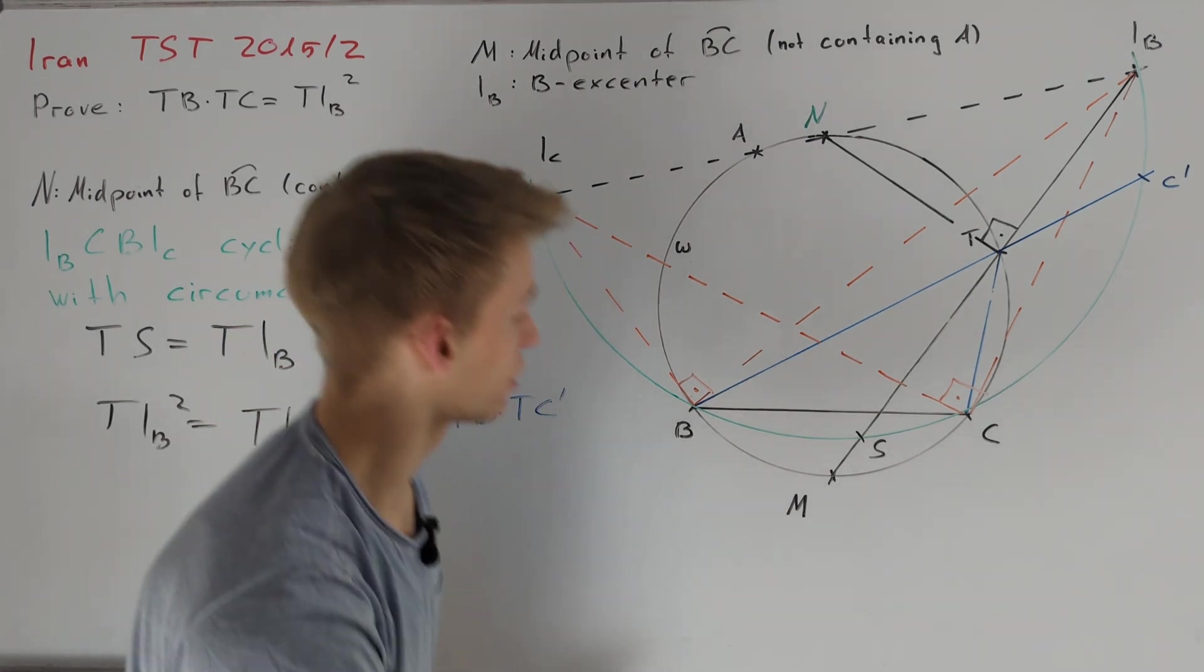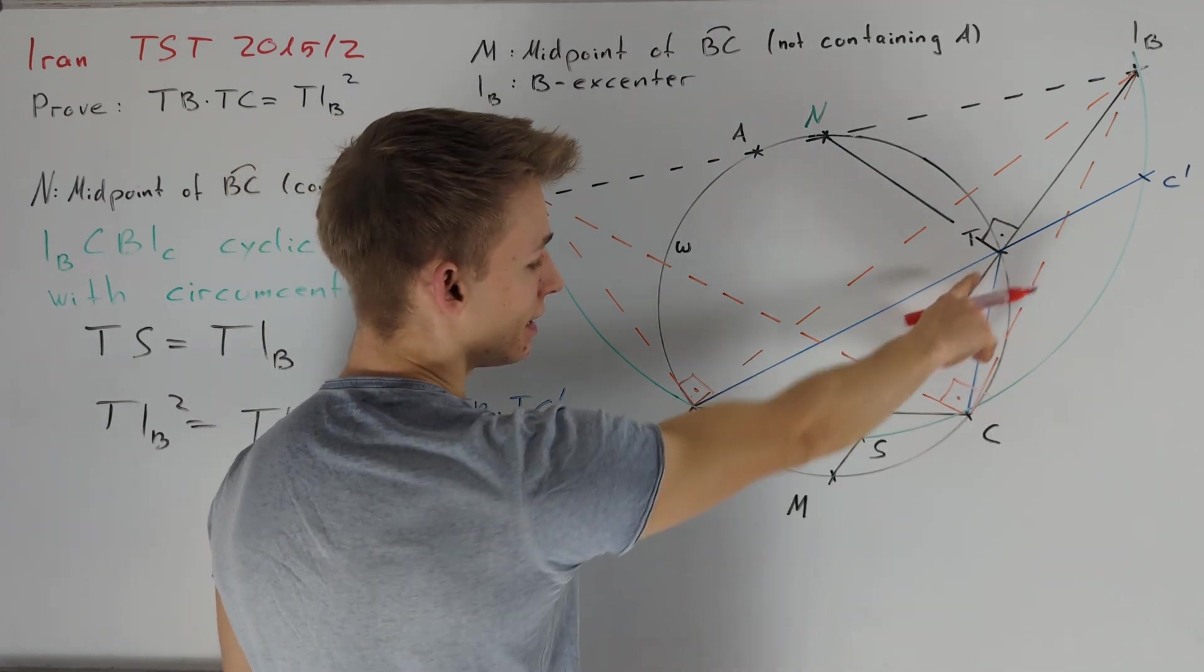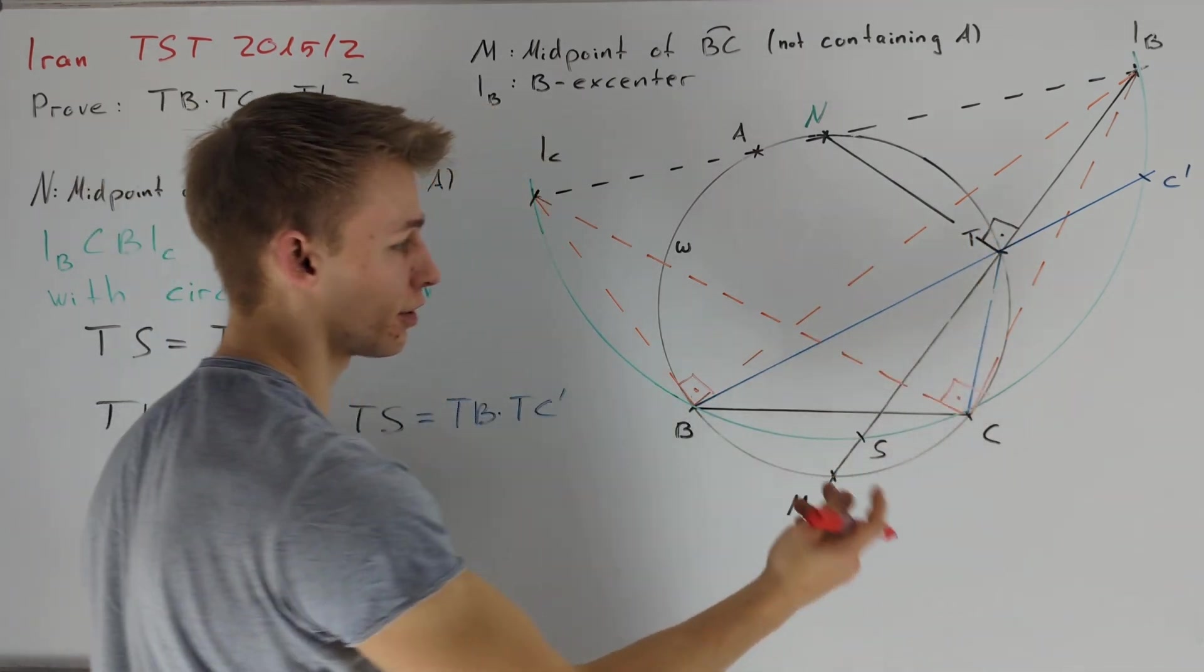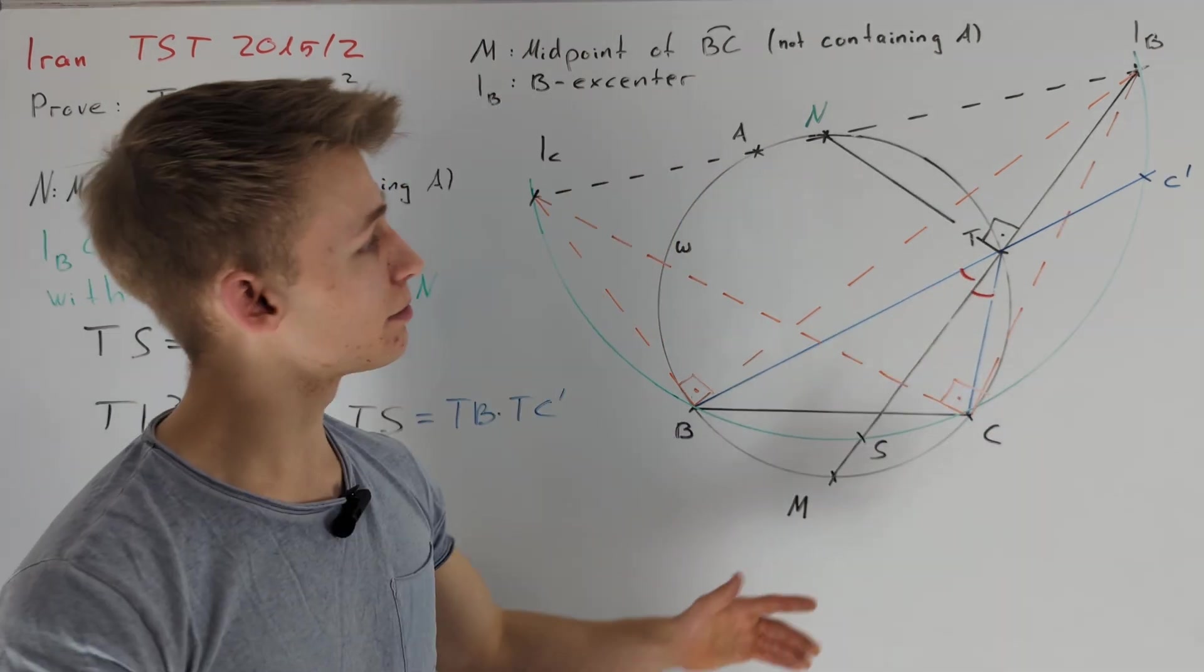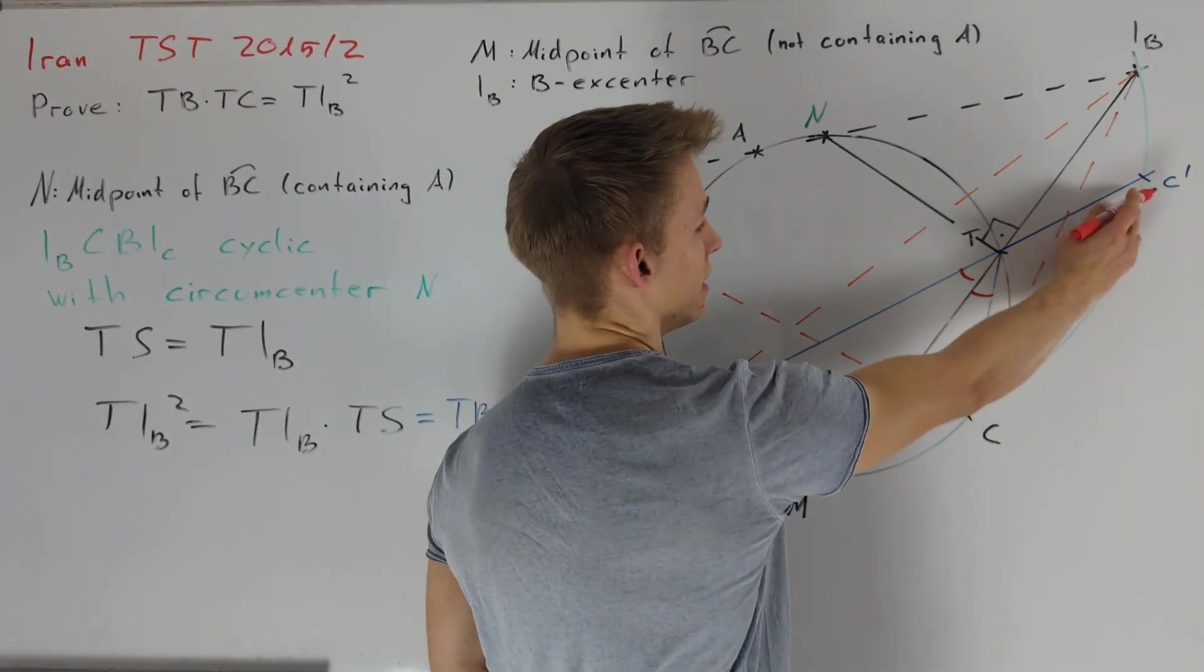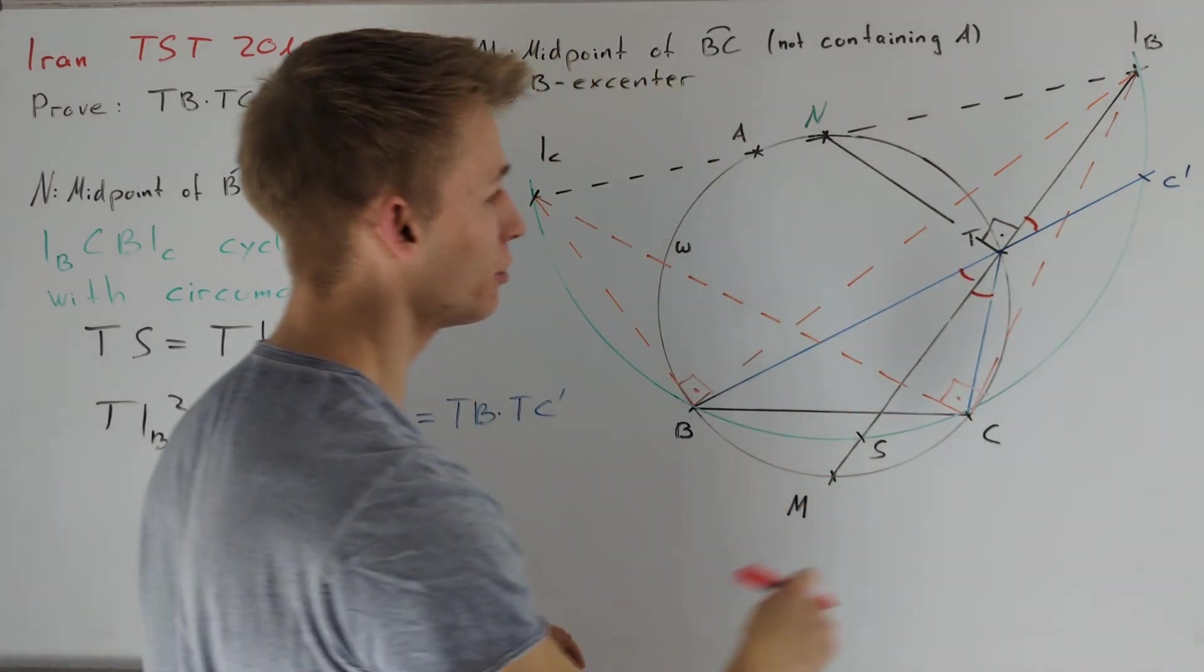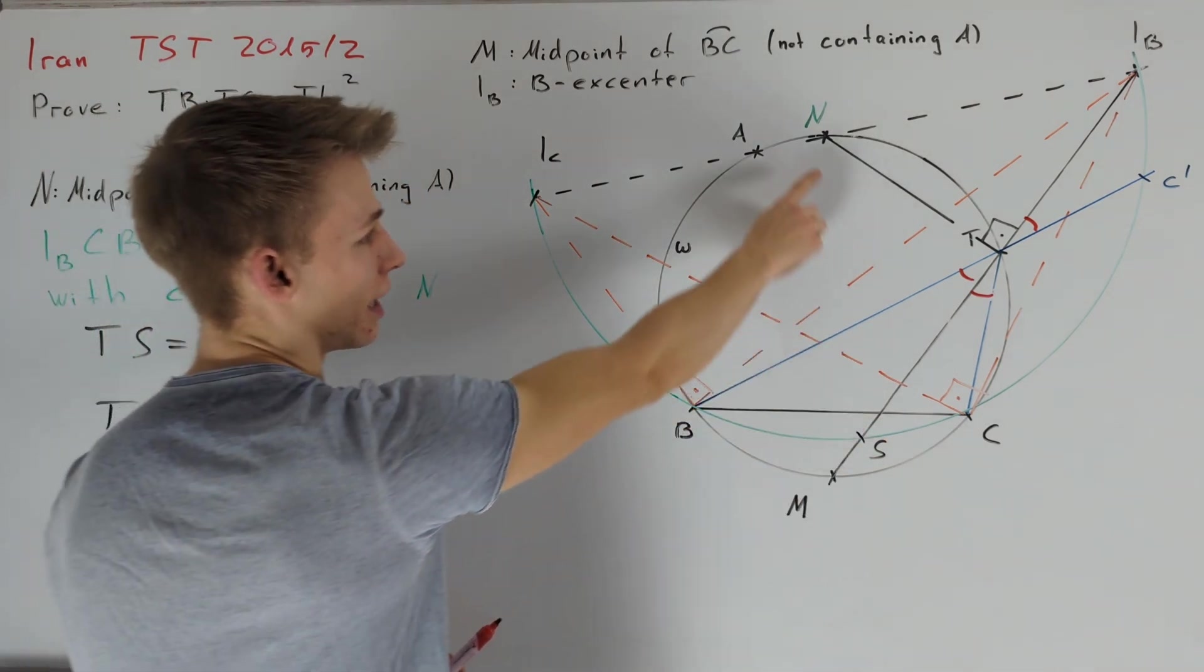For doing this, notice that since M is the midpoint of arc BC, TM is the angle bisector of angle BTC. So, these angles here are of equal size. This implies that also angle C prime TN is equal to this red angle and we conclude that angle C prime TN is equal to angle NTC.